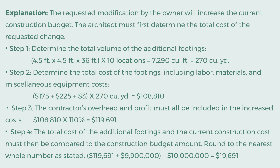Step 2: Determine the total cost of the footings, including labor, materials, and miscellaneous equipment costs. The sum of $175, $225, and $3, multiplied by 270 cubic yards, equals $108,810. Step 3: The contractor's overhead and profit must be included in the increased costs. $108,810 × 110% = $119,691.